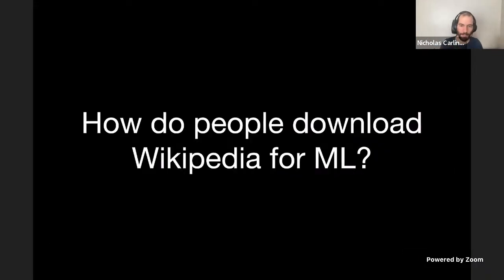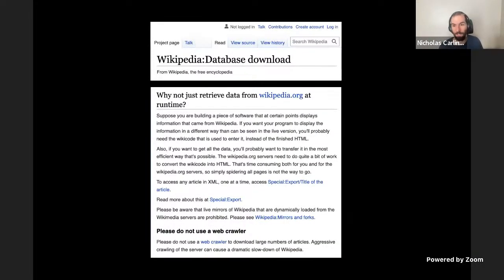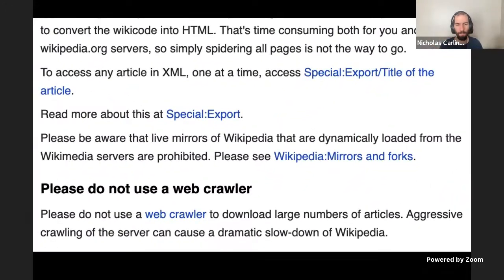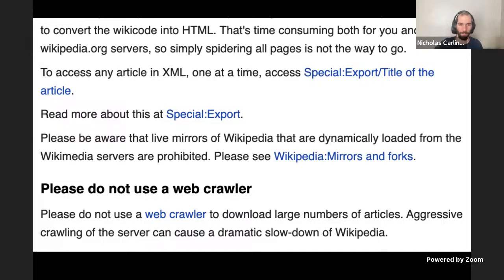So how do people actually download Wikipedia for use in machine learning? You might think they crawl Wikipedia live, but that's not what happens — Wikipedia explicitly says 'please do not use a web crawler.' Instead, they provide a series of snapshots of the entire Wikipedia database at points in time. When people create datasets like The Pile or other derived datasets, they use these snapshot downloads. The key observation is that these snapshots turn temporary vandalism into a permanent part of the record.